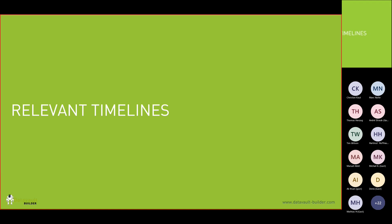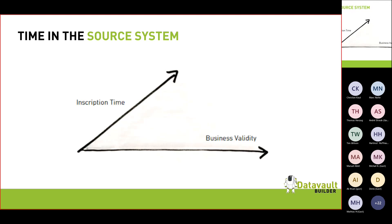Which relevant timelines do I come across regularly? I'm not talking about insurance business where we sometimes have six or seven different timelines — when a letter arrived, when it was scanned, when it was processed. I'm limiting this section to the three most relevant timelines I encounter in most projects. Let's look at the source system. One thing we see again and again is business validity — the validity in the real world.